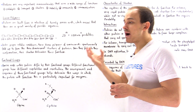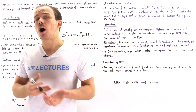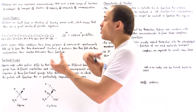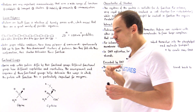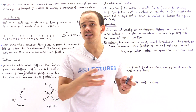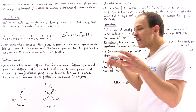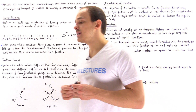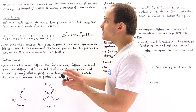Proteins do not usually act by themselves. Proteins usually interact with other proteins or other macromolecules to form fully functional complexes, and these protein complexes are responsible for creating different types of processes and reactions. For instance, when we study DNA replication, we'll see that many different types of proteins have to work together and form protein complexes to actually carry out the process of synthesizing and replicating DNA molecules.